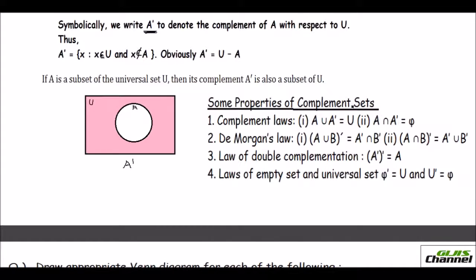Here you have a few properties of complement sets. The first one is the complement law. A union A complement equals the universal set. Similarly, A intersection A complement equals the empty set, because A is the plain area and A complement is the pink area — there is no common space between them. In the Venn diagram, the universal set is a rectangular box and A complement is the shaded portion outside A.